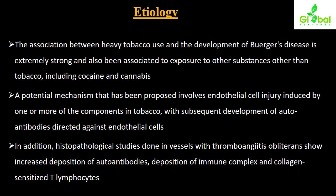A potential mechanism proposed involves endothelial cell injury induced by one or more components in tobacco, with the subsequent development of auto-antibodies directed against endothelial cells. So with heavy tobacco use, a mechanism is propagated that causes destruction of the endothelial cell lining, and simultaneously auto-antibodies against endothelial cells are developed.